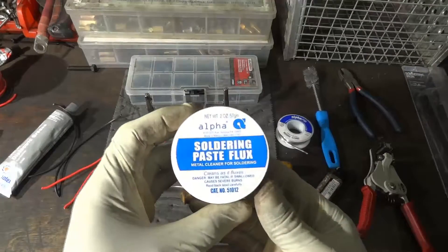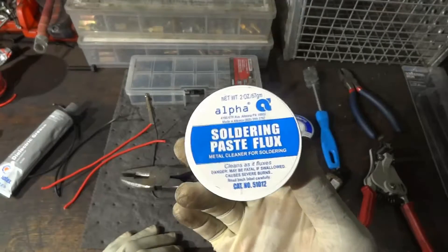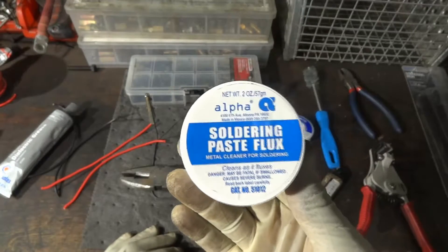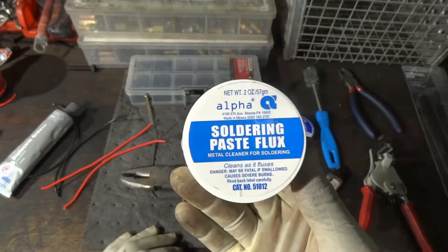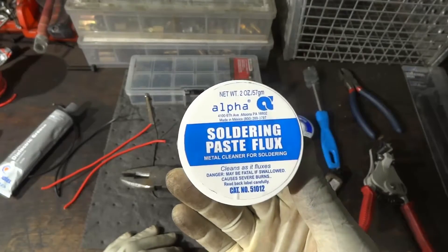I have some soldering paste flux here. I like using this paste because it protects the wire against oxidation and it also helps melt the solder into the wire strands pretty easily.